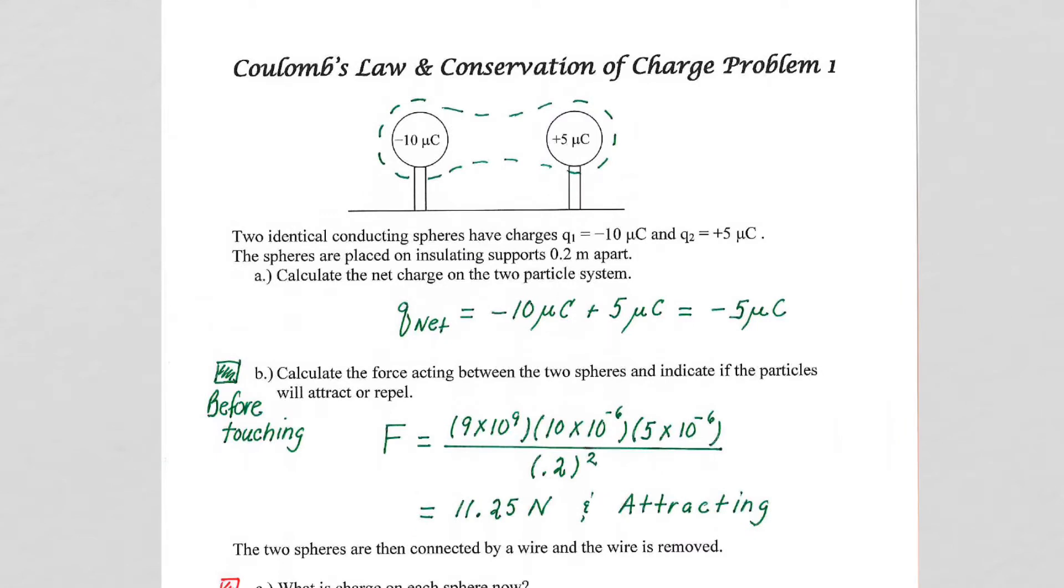For this chapter, and until later in the course when we can understand and be able to calculate the difference between non-identical conducting spheres, which we will be able to do, but we need a little more physics for that. For right now, they will always be identical conducting spheres.